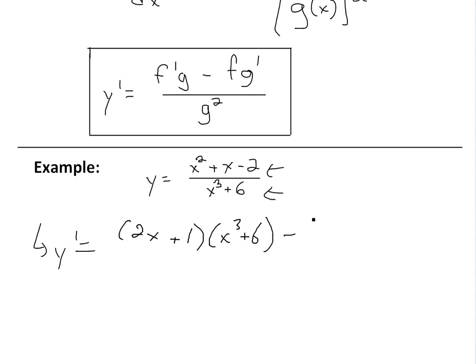And then we subtract: we write the top, x² + x - 2, and then multiply by the derivative of the bottom, which is... x cubed, the derivative of that is 3x², and the derivative of 6 is 0, it's just a constant, so we cancel that out. And this is all divided by the bottom squared, so (x³ + 6)² right here.